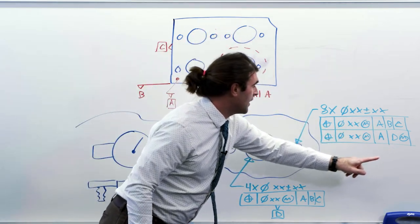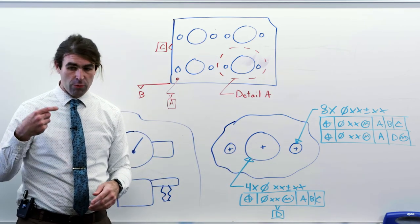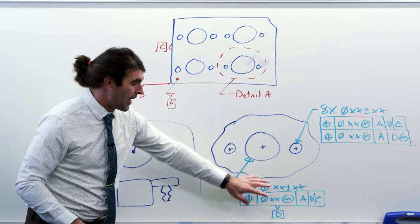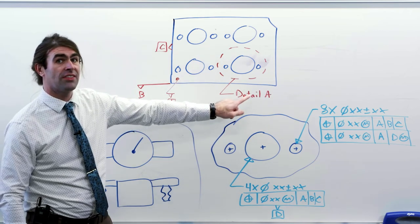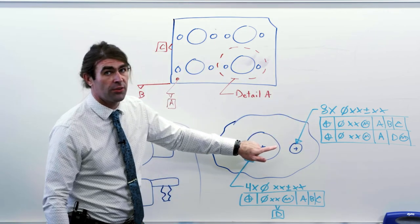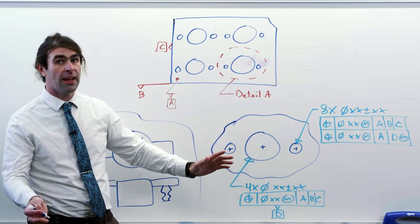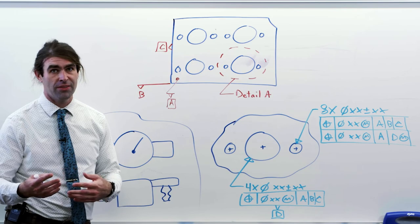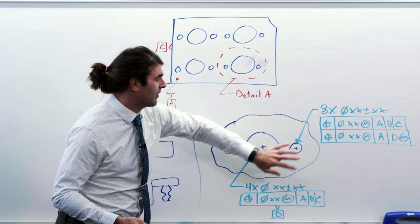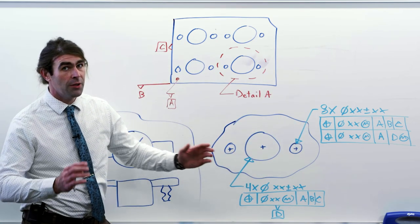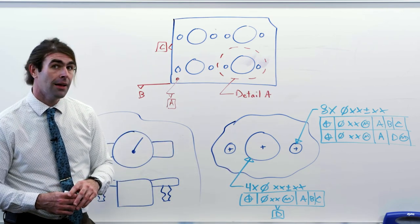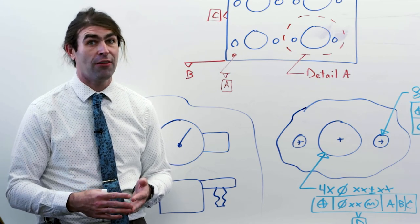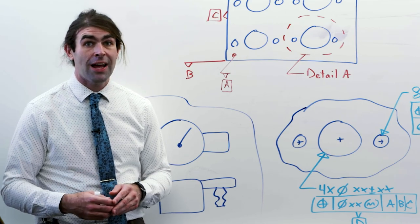Datum A is the big flat surface and datum D is the individual big hole — that is a repetitive pattern with a repeated datum reference frame. This isn't the only way to write it; you could say 'four times detail A' and write two times for the two small holes and one time for the big hole, with the whole detail understood as repeated. I hope you enjoyed this and learned something new about GD&T, especially useful if you ever want to take the certification exam. If you liked the video, please like and subscribe and leave a comment below.